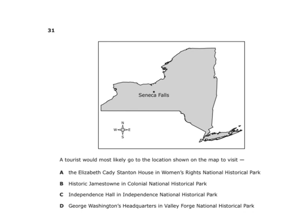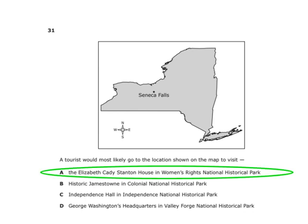A map shows Seneca Falls — a tourist would most likely go there to visit the Elizabeth Cady Stanton House in Women's Rights National Historic Park. The women's movement in the early republic was framed around social reform, some driven by the Second Great Awakening — a religious movement that got people involved in social changes like the temperance movement.